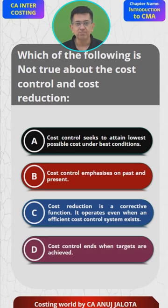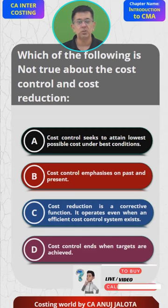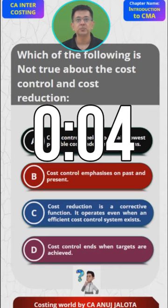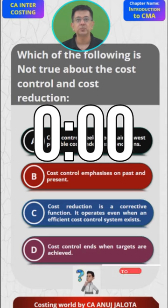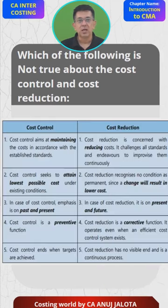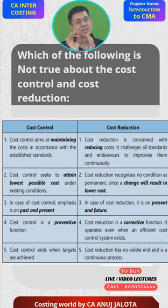Think about the answer first and put it in the comments below. Now, cost control and cost reduction — the best example of cost control is standard costing, where you set standards and check whether your actuals are matching those standards or not.